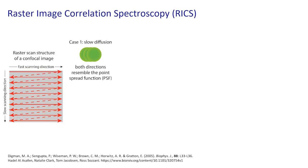Let's think about building the autocorrelation function for a case of very slow diffusion — essentially immobile molecules. The other thing about RICS is you have to be zoomed in really far, below what's known as the Airy unit.